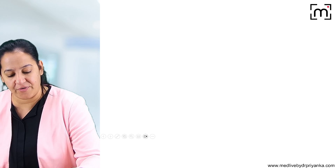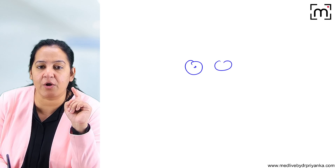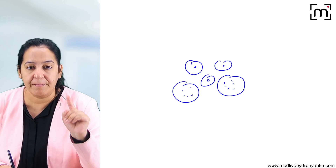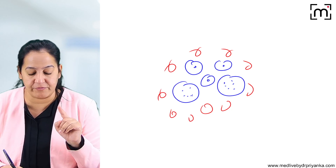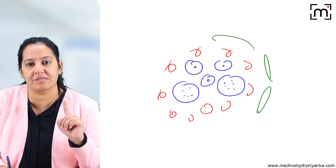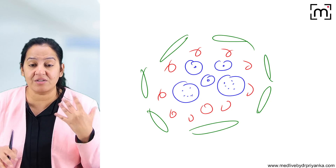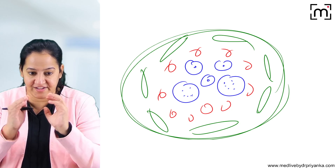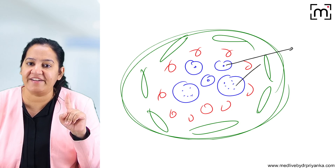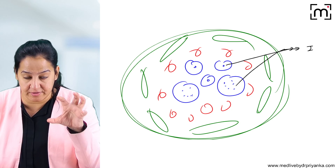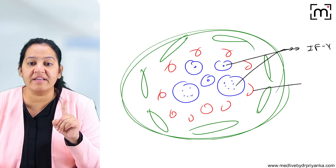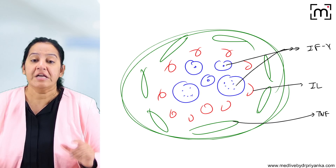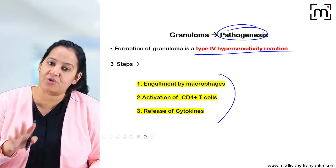Let's draw the granuloma. In the center we have epithelioid cells; some of them fuse to form giant cells. The middle zone is formed by T lymphocytes, and the outermost zone is formed by fibroblasts which produce collagen, causing fibrosis outside the granuloma. So a granuloma has three zones: the center contains epithelioid cells and giant cells (due to interferon-gamma), the middle zone contains T lymphocytes (due to interleukins 1 and 2), and the outermost zone contains fibroblasts (due to TNF). This is known as granulomatous inflammation.